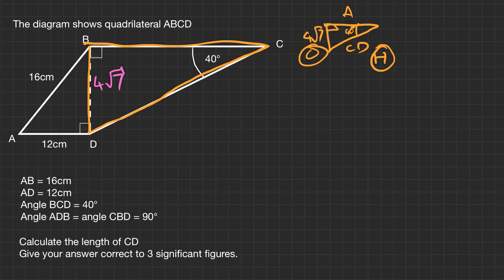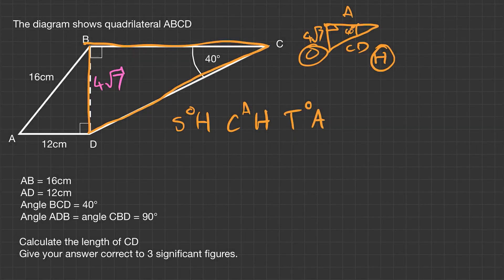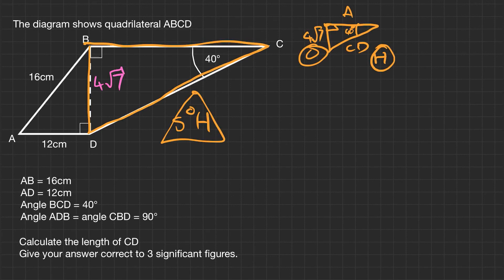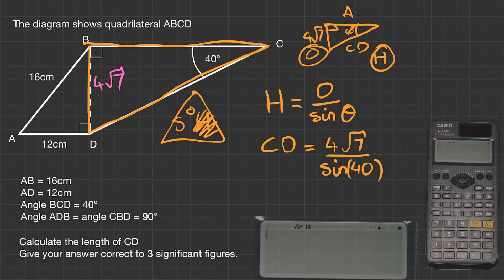The second step is using SOH CAH TOA. Now we've got the hypotenuse and the opposite. Therefore, we're going to be using SOH. Next, we need to work it out. We want to find the hypotenuse, so we're going to put hypotenuse equals the opposite over sine of the angle. Substitute the values into the equation. Side CD equals the opposite, which is 4 root 7, all over sine of the angle, sine 40. Enter this into your calculator.